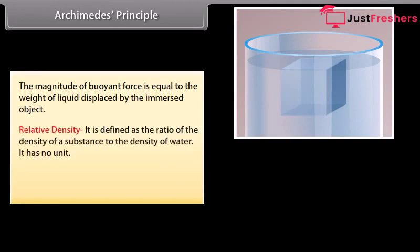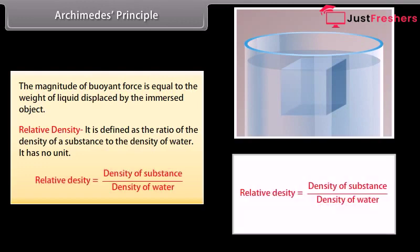Relative density is defined as the ratio of the density of a substance to the density of water. It has no unit. Relative density equals density of a substance divided by density of water.